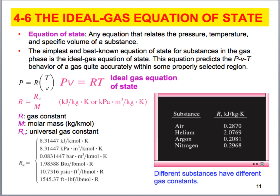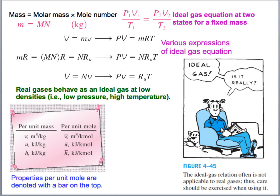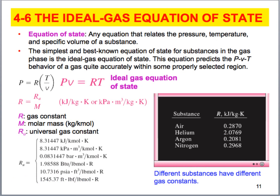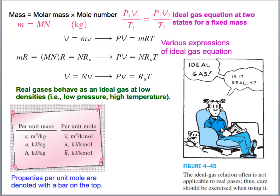For example, if we're dealing with nitrogen (N2), we take 8.314 kJ/kmol·K and divide by 28 to get the ideal gas constant for that gas. We can write the ideal gas equation in several different ways: pressure times specific volume equals R times T; pressure times volume equals mass times R times T; or pressure times volume equals moles times the universal gas constant times T.